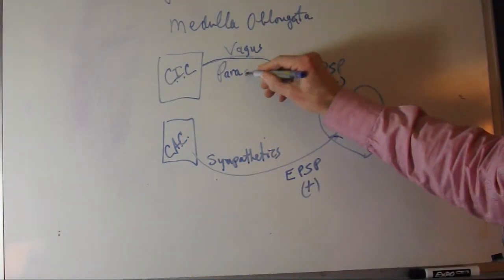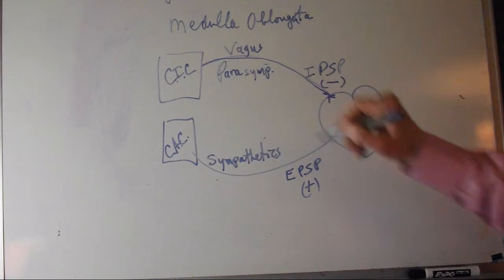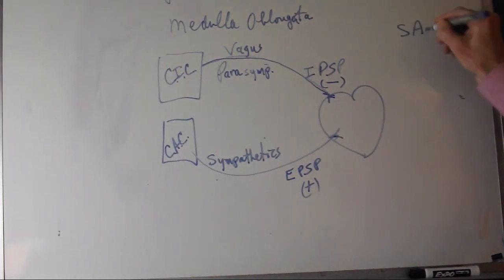The parasympathetics affect and innervate the SA node mostly, and the AV node. They are associated with acetylcholine and reduce heart rate.